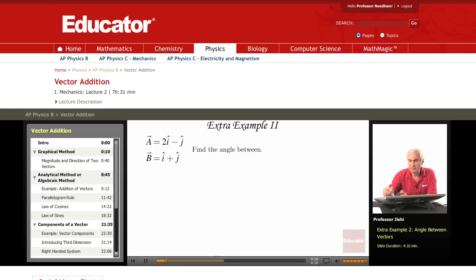It's a good idea, first, whenever we're given two vectors, to draw the two vectors so that you get an idea of what angle to expect. A is 2i minus j. This means I go 2 along the x-axis and minus 1 here. So A will be this vector. This is A.